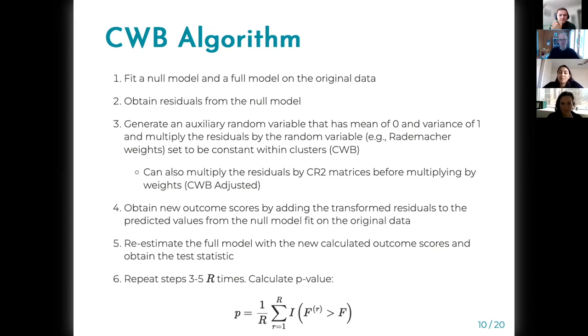Then obtain residuals from the null model. Generate an auxiliary random variable like Rademacher weights, which is set to be constant within clusters. We also studied a variant of this by multiplying the residuals by CR2 matrices to correct the variance in case the working model is incorrect.